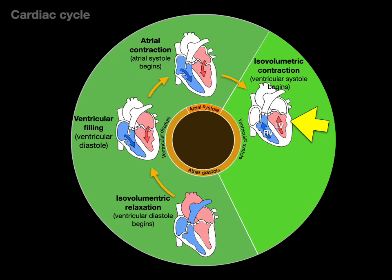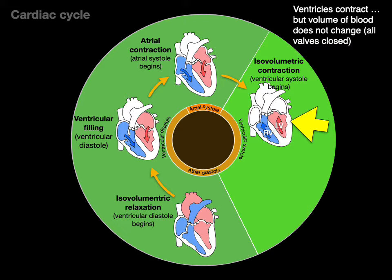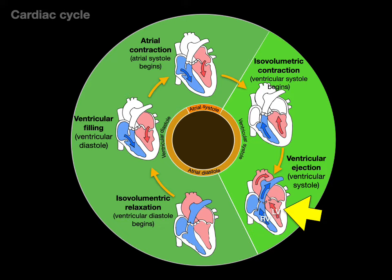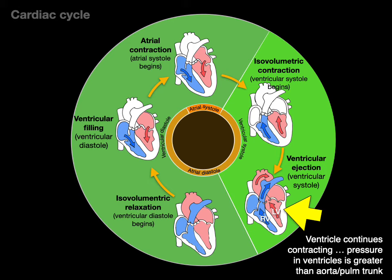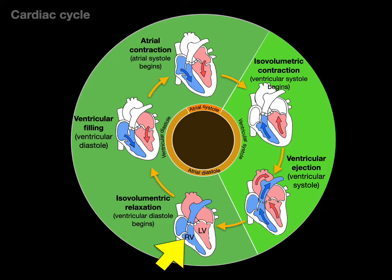We now enter ventricular systole, beginning with isovolumetric contraction. The ventricles start to contract, forcing the tricuspid and mitral valves to close, but the volume of blood does not change because the pressure isn't yet greater than aortic or pulmonary trunk pressure. Then ventricular ejection occurs as ventricular contraction continues and pressure exceeds aortic and pulmonary trunk pressure, forcing blood out. We then return to isovolumetric relaxation as the ventricles begin to relax — completing one cycle.